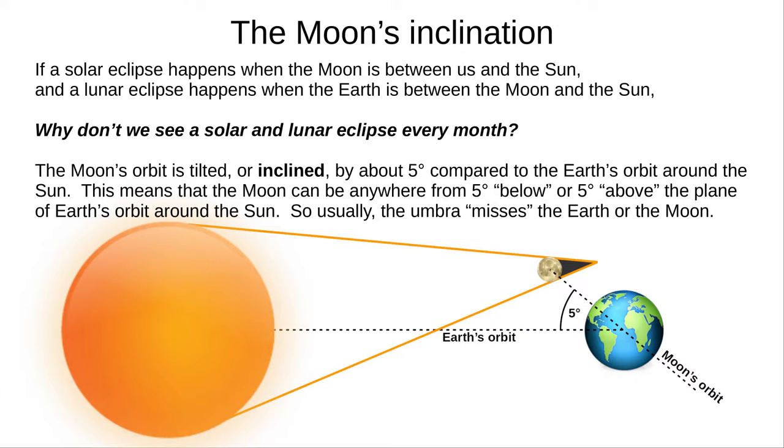Most months, the Moon passes too far above, or too far below, the Sun, at the times of new and full moons, to give us an eclipse. The shadow misses us.